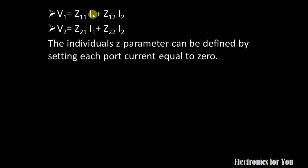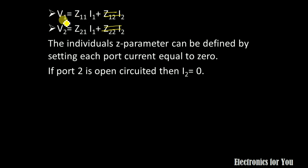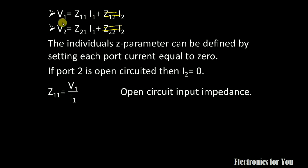To find the values of Z11, Z12, Z21, and Z22, we have to set one port current equal to zero. First, let us consider I2 equal to zero, that is port 2 is open circuited. Then Z11 equals V1/I1 and is known as open circuit input impedance. It is also known as the driving point impedance at port 1 with port 2 open circuited.